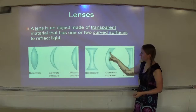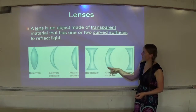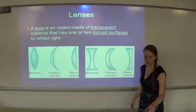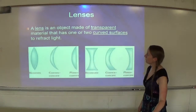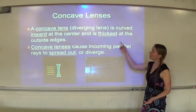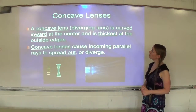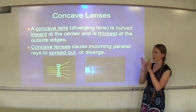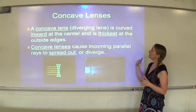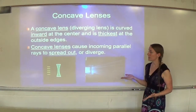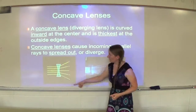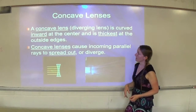When looking at a lens with mixed curvatures, it depends on which direction you're looking through the lens. A concave lens, also known as a diverging lens, is curved inward at the center and is thickest at its outer edges. These are examples of concave lenses.